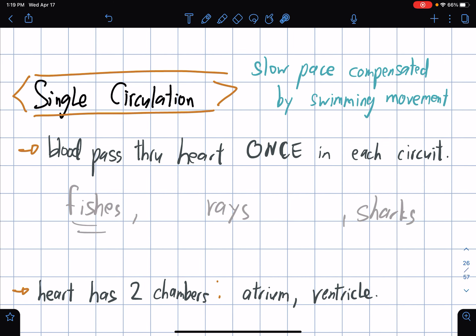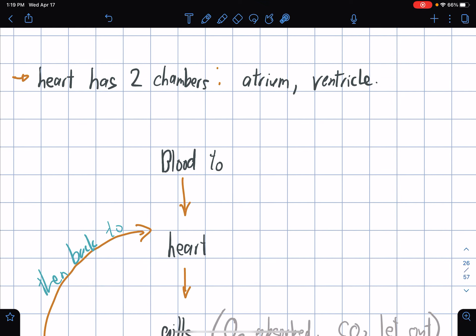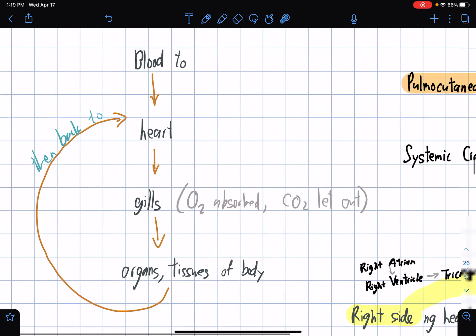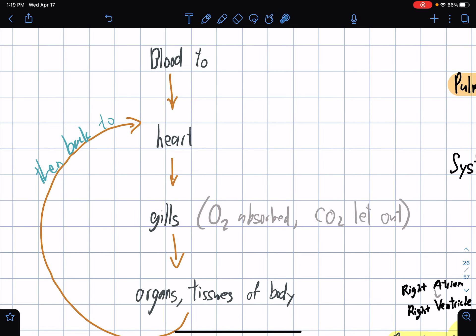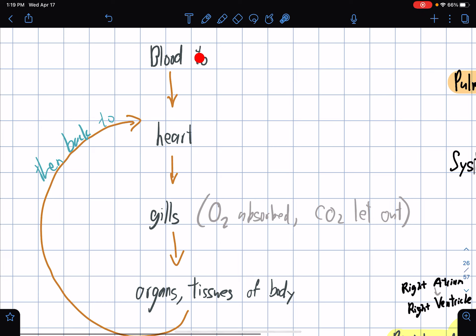Let's start first with single circulation. Slow pace compensated by swimming movement. This is associated with swimming since most species that have the circulation swim. The heart has two chambers: the atrium and the ventricle.